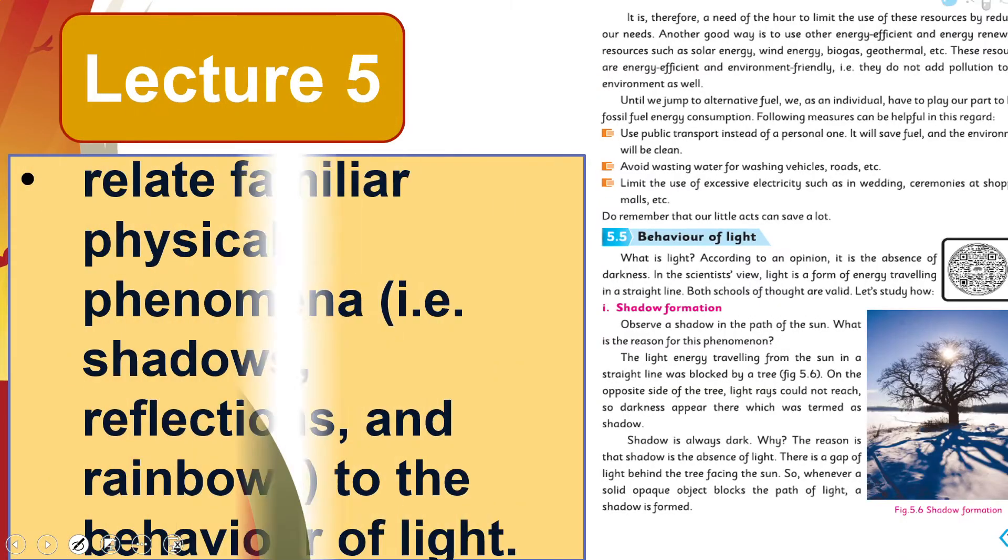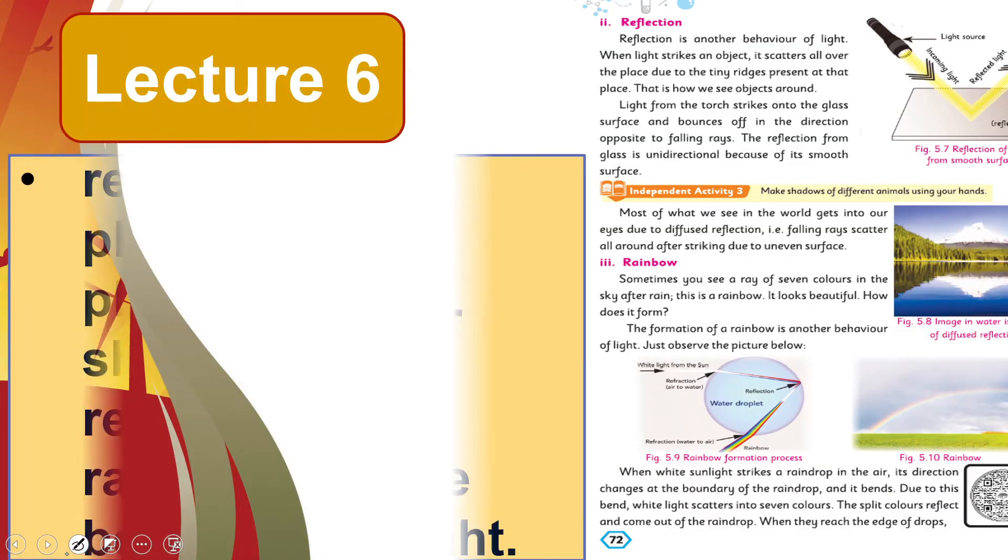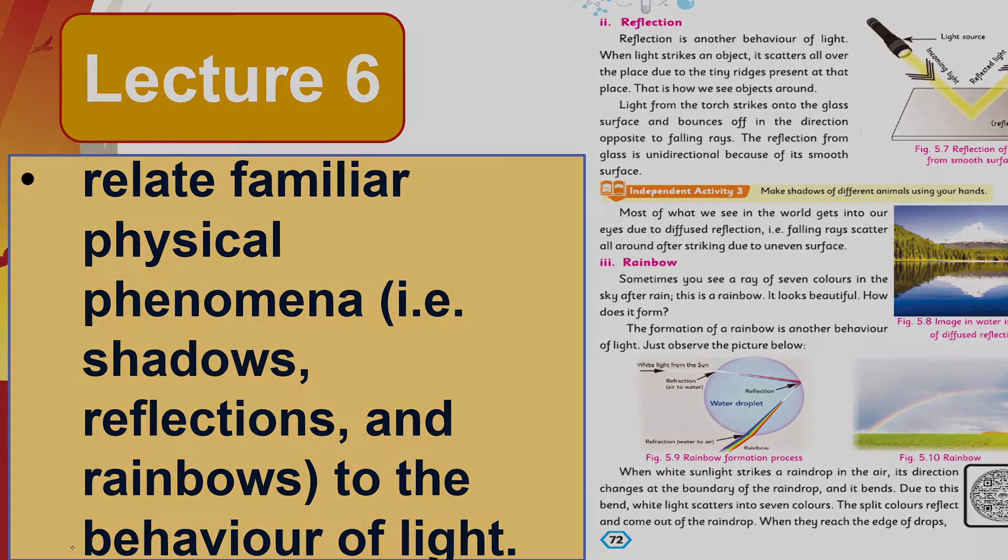In lecture number five, students will be able to relate familiar physical phenomena—that is, shadows, reflection, and rainbow—to the behavior of light. So my dear students, light is also a form of energy, and how shadows are formed, reflections are formed, rainbows are formed, we will discuss that in lecture number five. In lecture number six, students will continue to relate these physical phenomena to the behavior of light, and we will discuss different phenomena like rainbow formation and reflection.